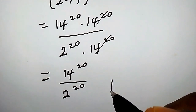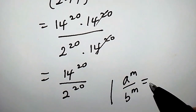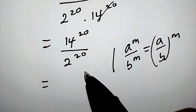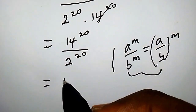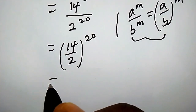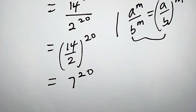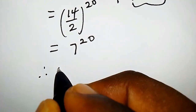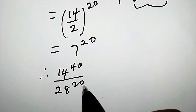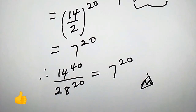By the law of indices, a to the power of m over b to the power of m equals (a over b) all to the power of m. Applying this property, we get (14 over 2) to the power of 20, which equals 7 to the power of 20. Therefore, 14 to the power of 40 over 28 to the power of 20 equals 7 to the power of 20. That's it — see you in the next video!